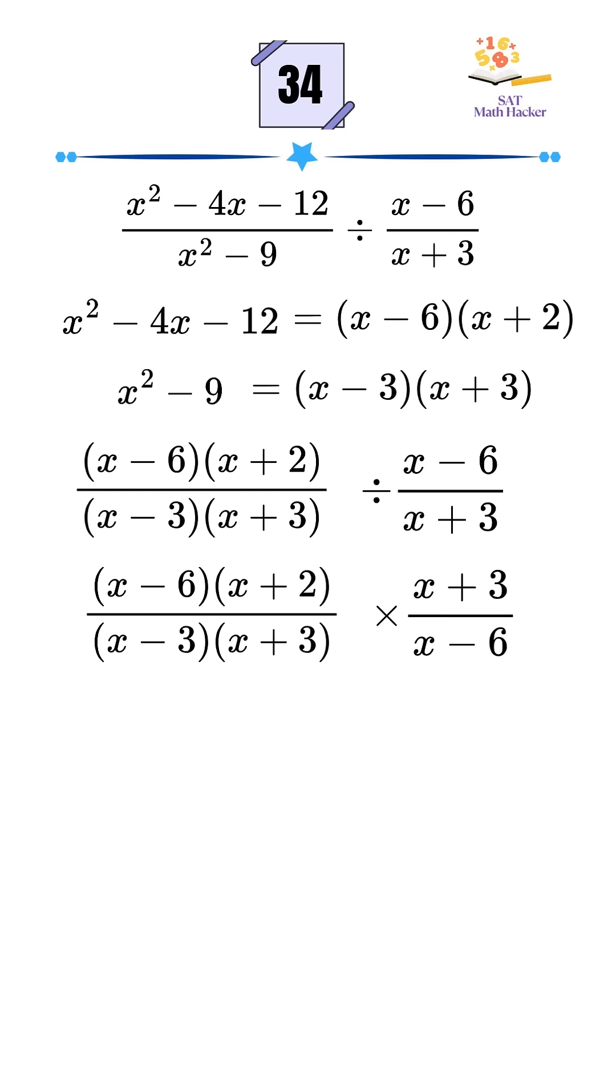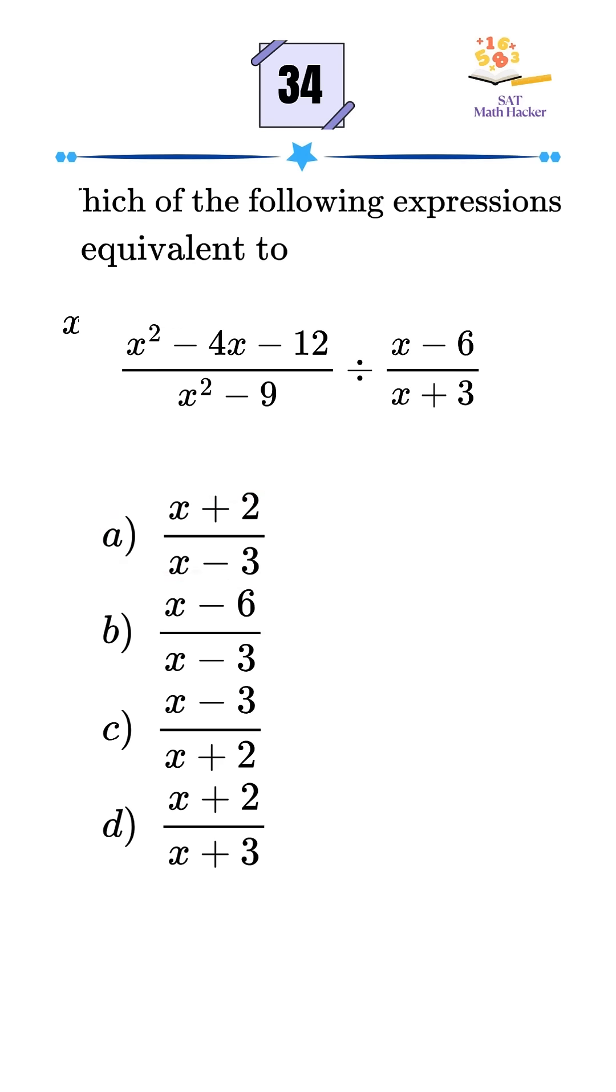Now we cancel out the common terms. x minus 6 cancels with x minus 6, and x plus 3 cancels with x plus 3. We're left with x plus 2 over x minus 3. That's the final simplified expression, which matches option A.